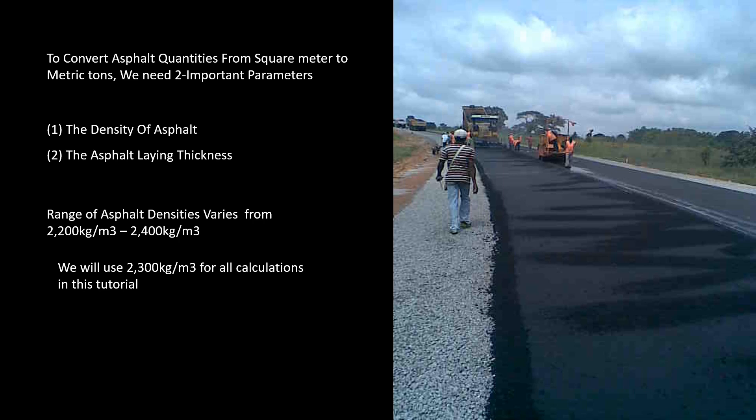The range of asphalt density varies from 2200 kilograms per meter cubed to 2400 kilograms per meter cubed. But for the purpose of this tutorial, we will use 2300 kilograms per meter cubed for all our calculations, which is what I use as my asphalt density.